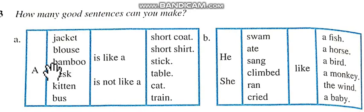Jo cheez doosre jaisi hai, us ke liye hum option use karenge 'is like a'. Or jo cheez different hai, us ke liye 'is not like a'. A jacket is like a short coat. Jacket ek chhote coat ki tarah hoti hai. A blouse is like a short shirt. A bamboo is like a stick.